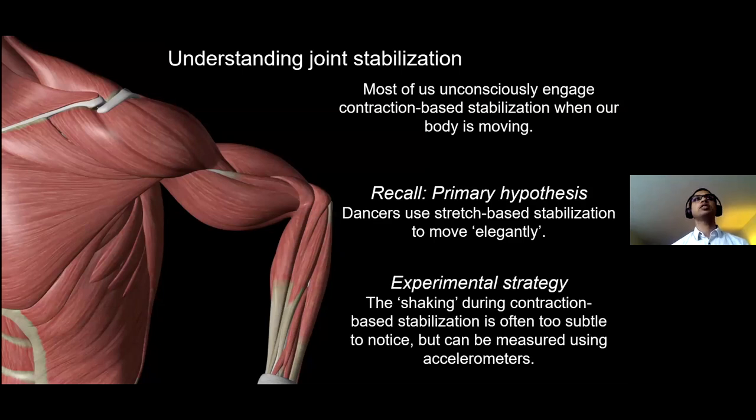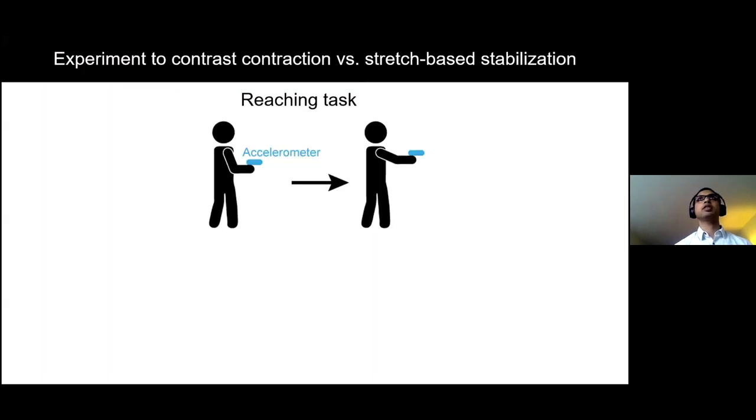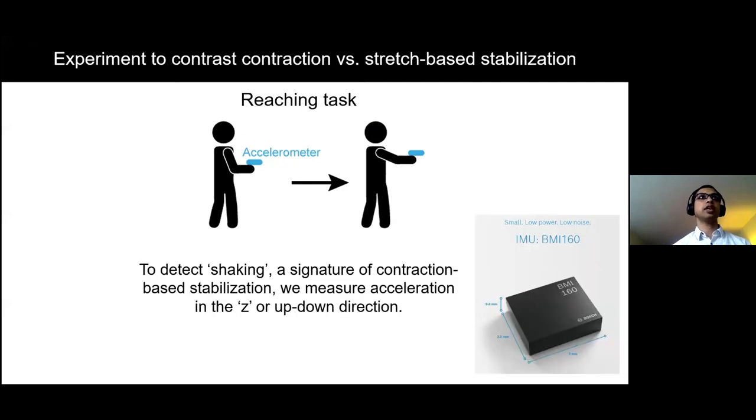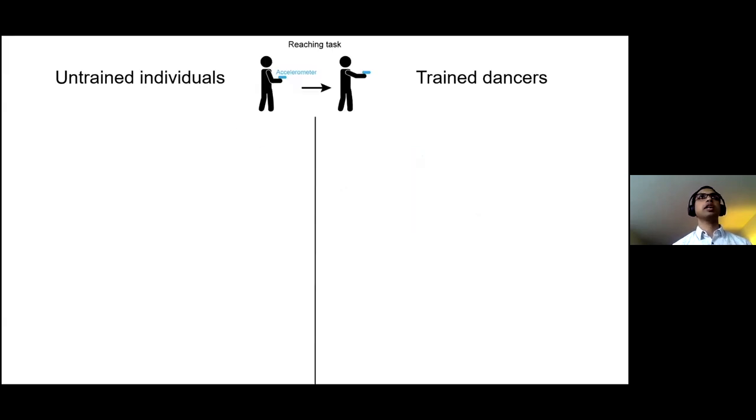Our experimental strategy to test if this is true is to monitor the shaking during contraction-based stabilization, which is often too subtle to notice, but we can measure it using accelerometers. We do a very simple task: hold an accelerometer in the hand and reach out in front, just extending the elbow. I'm measuring acceleration in three directions using the chip in my phone, which uses an inertial momentum unit. To detect shaking, which is a signature of contraction-based stabilization, we measure acceleration or changes in acceleration in the z or up-down direction.